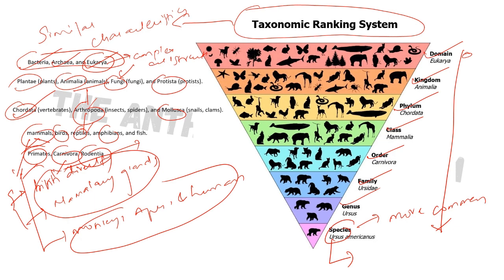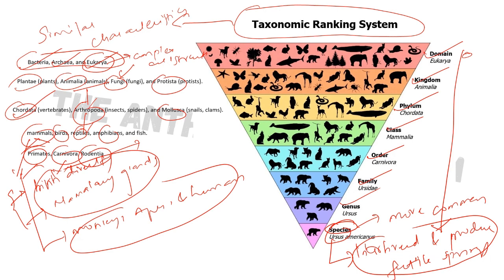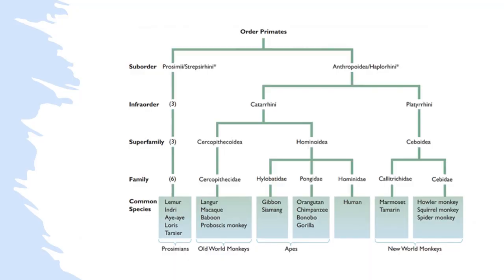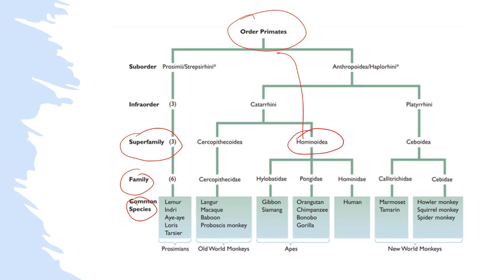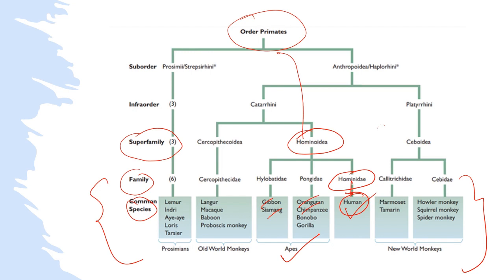Mammals are further classified into various orders such as primates, carnivores, and rodentia. Primates includes monkeys, apes, and humans — this is the area where we are most concerned. Regarding species: organisms classified at the species level have the ability to interbreed and produce fertile offspring. Humans belong to the order Primates, which is further classified into super-families, families, and species. Humans belong to the super-family Hominoidea, which includes apes — gibbons, siamang, orangutans, and chimpanzees — as well as humans.